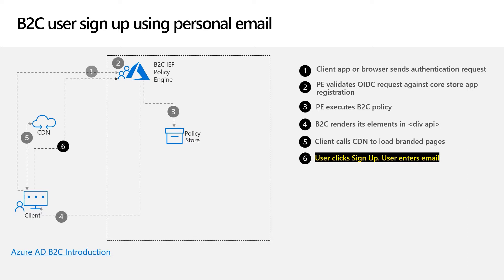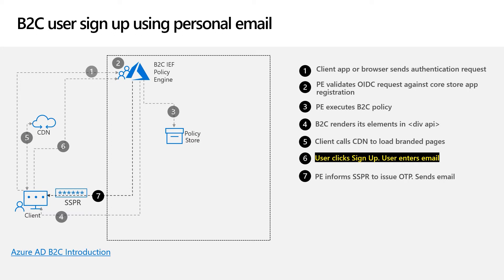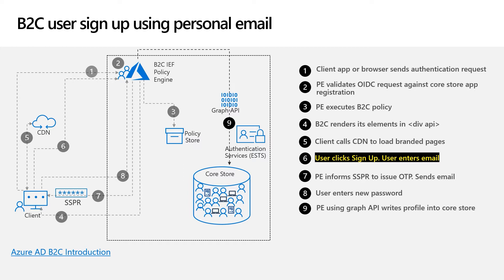You can then enter your email to begin the registration. By default, you will be asked to validate your email, but this is optional. If email validation is required, the policy engine informs the self-service password reset service to issue a one-time passcode, which will be sent to your inbox. You can then enter and verify your one-time passcode. You now enter your new password for your account. As you submit the sign-up form, the policy engine makes a Graph API call to write your account information into the core store.